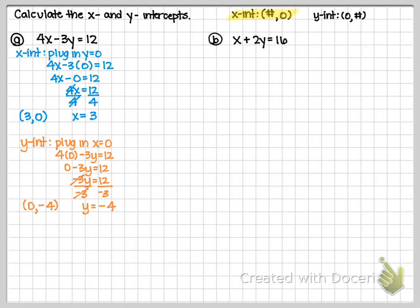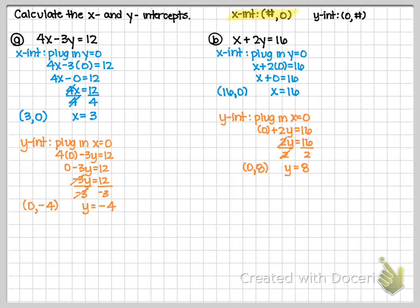The next question works the same way, so pause the video and see if you can do it yourself. The key idea: if you want the x-intercept, plug in y = 0 to make y disappear; if you want the y-intercept, plug in x = 0 to make x disappear. Give it a shot, check your work against mine, and that'll conclude the notes for this section.